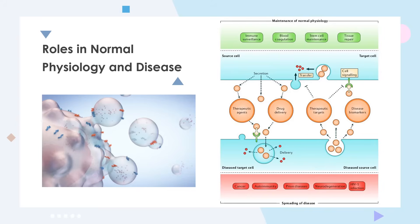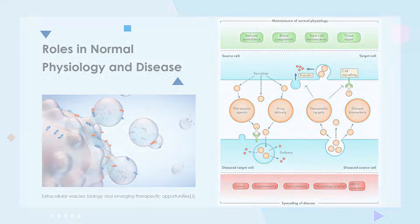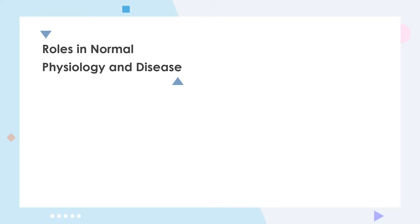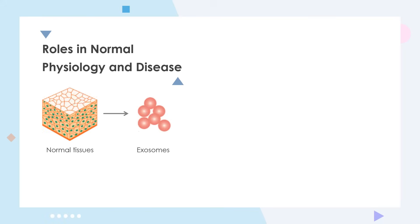In addition, extracellular vesicle-mediated transfer of prion proteins and toxic protein aggregates can regulate the progression of neurodegenerative diseases. The transfer of extracellular vesicle-bound viral material is also relevant to HIV-1 infection. Extracellular vesicles are regarded as targets for therapeutic intervention and used as disease biomarkers because of their participation in disease progression.